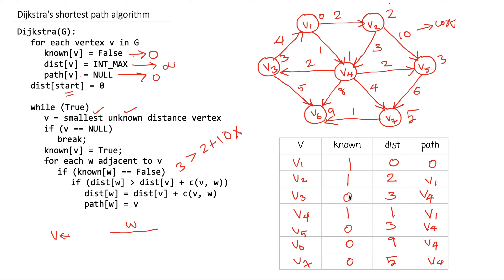Moving on, we look for the smallest unknown distance vertex. The unknown vertices are v3, v5, v6, and v7. Both v3 and v5 have distance 3 — we choose v3 as it comes first. V3 is not null so the loop continues. We assign known(v3) = 1.